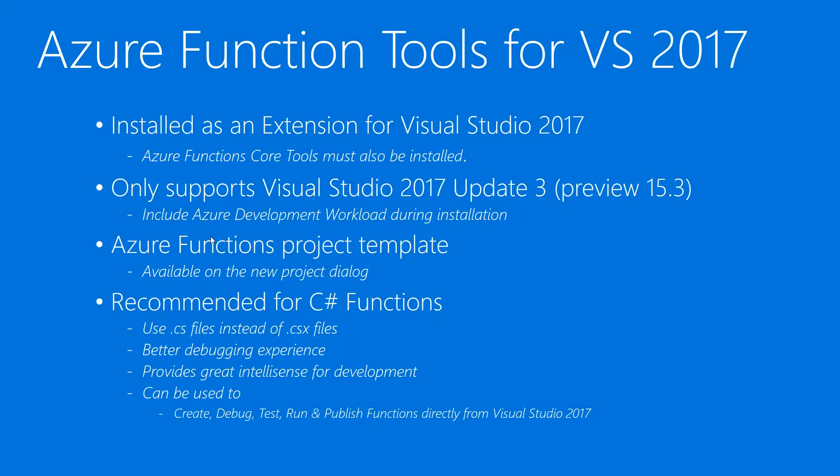The next option is the Azure Function Tools for Visual Studio 2017 extension. This extension is installed into Visual Studio 2017, and at the moment it only works with Visual Studio 2017 Update 3, which is in preview. You need to have the Azure Functions Core Tools NPM package installed on the system, which installs the function host on your development machine. Visual Studio uses this function host to run and debug the functions that you create.